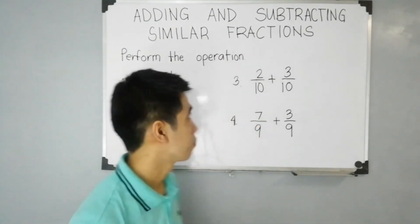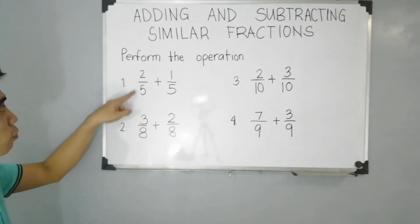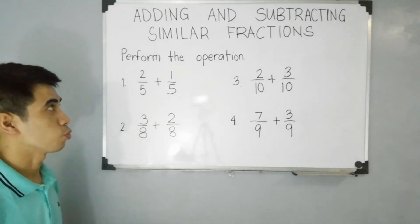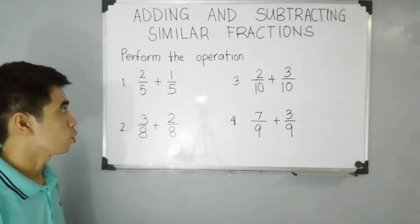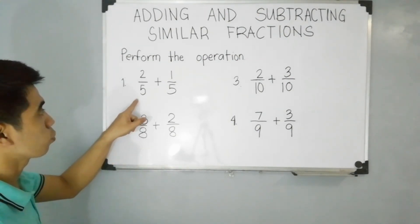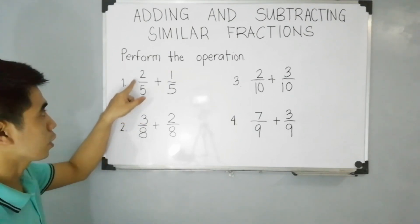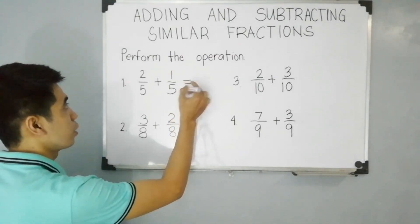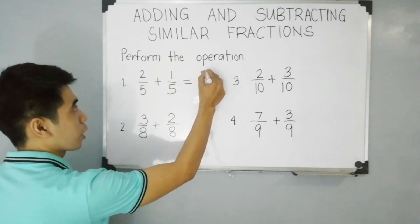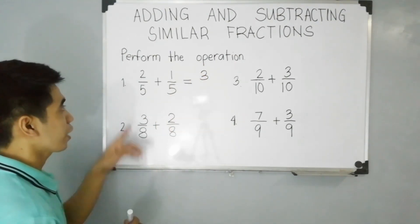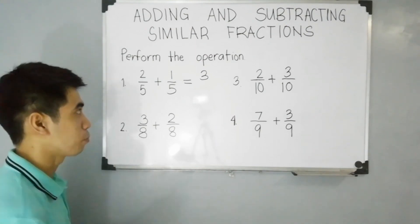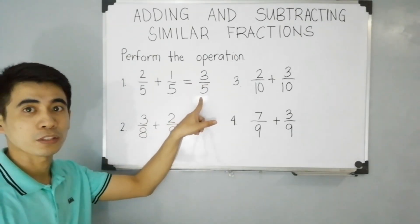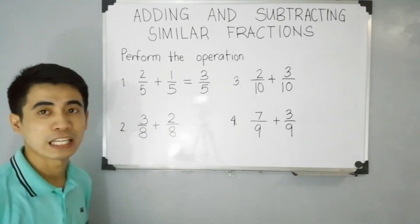Let's start! Let's add 2 over 5 and 1 over 5. Since, according to the rules of similar fractions, in adding similar fractions, we have to add the numerator, then copy the denominator. So, in this case, we have to add 2 and 1. 2 plus 1 is 3. Then copy the denominator since they have the same denominators — over 5. 3 over 5 is in simplest form. That's why 3 over 5 is your final answer.